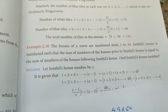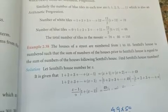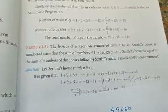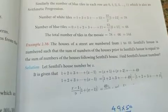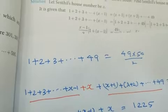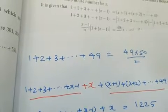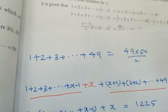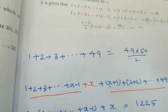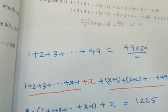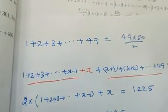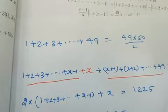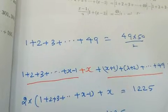You are given 49 numbers. Let me explain to find Sendhil's house number. For 1 to 49, what is 1 plus 2 plus 3 plus ... plus 49? That is 49 into 50 divided by 2. How do we split the number for Sendhil's house number?